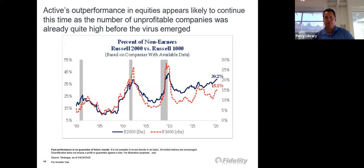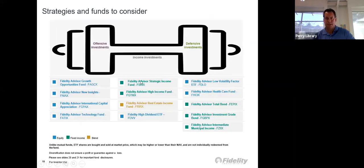Active outperformance in equities appears to be likely to continue. When you look at this, the Russell 2000 versus the Russell 1000. The Russell 1000, which is the red bar, is the top 1,000 stocks, and that was only down 15%, where the bottom 2,000 was down 39%.